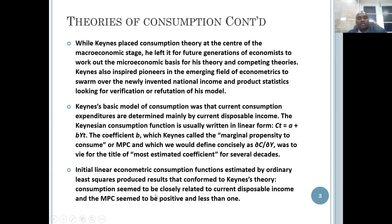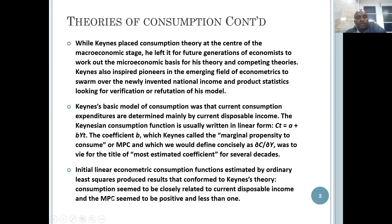Consumption seemed to be closely related to current disposable income, proxied by YT, though it can be something else if we introduce taxation into our simple economy. And the MPC seemed to be positive and less than one, which seemed to confirm the reasoning of John Maynard Keynes.